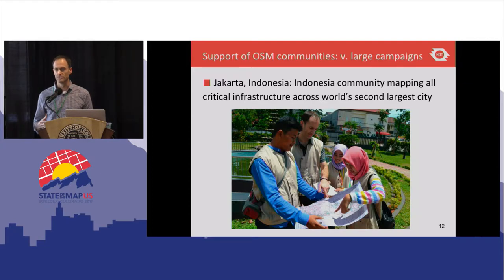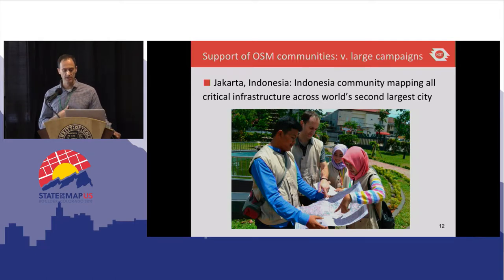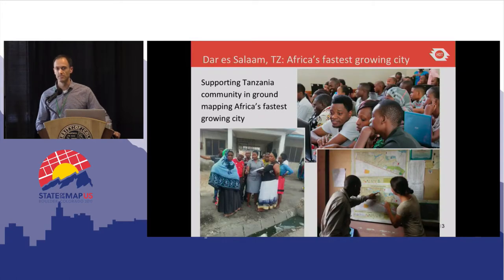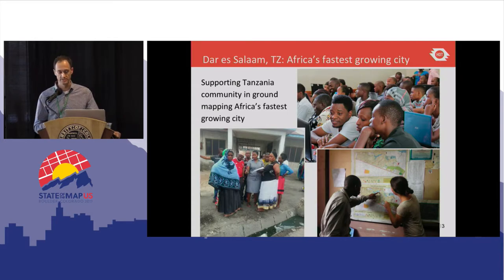Another priority for us is actually working on the ground doing field data collection, field mapping. We're doing this at very large scale in some of the world's most difficult contexts. Right now we're working in Jakarta, Indonesia — the second largest metropolitan area in the world — mapping all the critical infrastructure across the entire city. In Dar es Salaam, Tanzania — Africa's fastest growing city — we're working with a team of more than 300 students to cover the entire city and map critical infrastructure, especially drainage infrastructure, which is critically important during the rainy season when Dar es Salaam experiences heavy flooding.